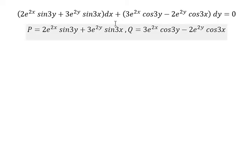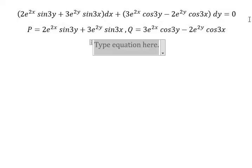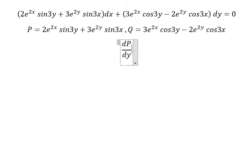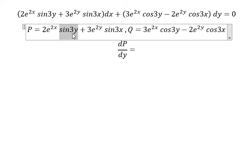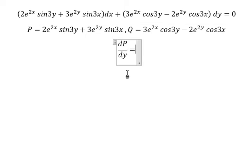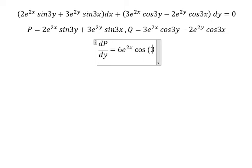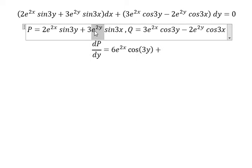Next, we have dx. That means we need to do the first derivative of b with respect to y. So this one we have sin(3y). The first derivative of sin(3y), we have 3cos(3y). So number 3 and number 2, we have number 6. So this one we have 2e to the power of 2y. So number 2 and number 3, we have number 6.